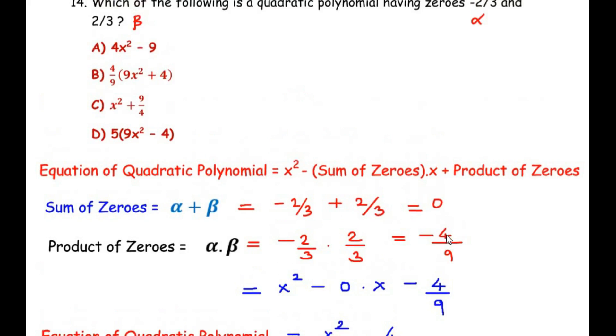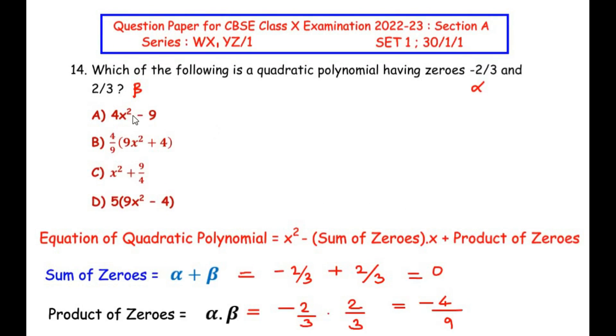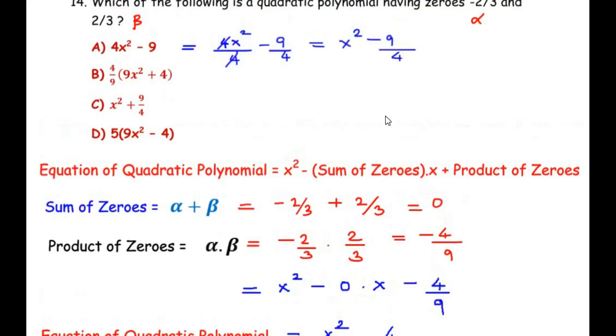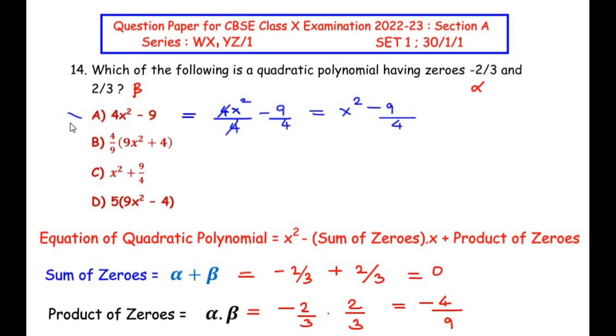Now let us see which of these given options gives us x² - 4/9. So starting with the first one, the first expression is 4x² - 9. So let me try to divide both the terms by 4 because it is the coefficient of x². So we get 4x²/4 - 9/4. So 4 from the numerator divides the 4 from the denominator. So we are going to get x² - 9/4 but we need the expression x² - 4/9, which means this is not the quadratic polynomial we are looking for.